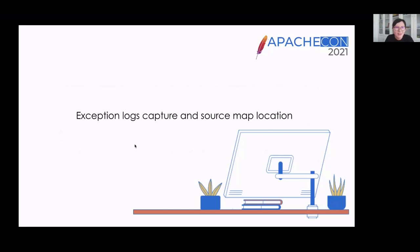The second part is about capturing exception logs and source map location. With the continuous expansion of the project and continuous onboarding of customers, the stability of the project has become a major challenge for the team. When users or testers encounter problems, they typically throw a white-screen page or a screenshot of the error. This makes front-end and back-end developers feel stressed about resolving the problem. Is there a way to improve the user experience and help developers quickly locate and solve problems? The answer is yes.